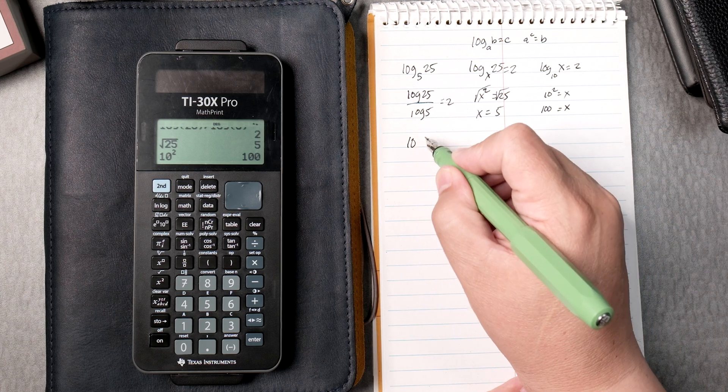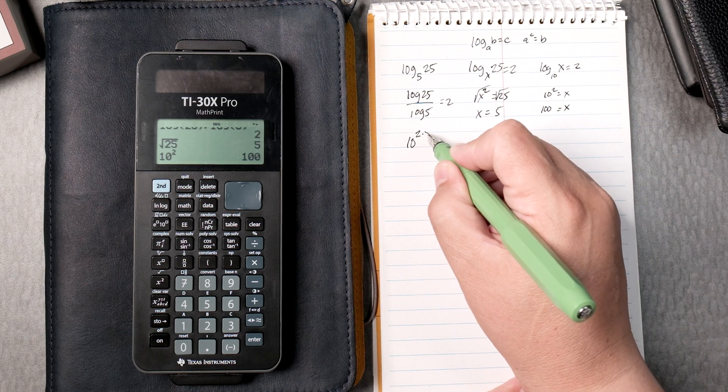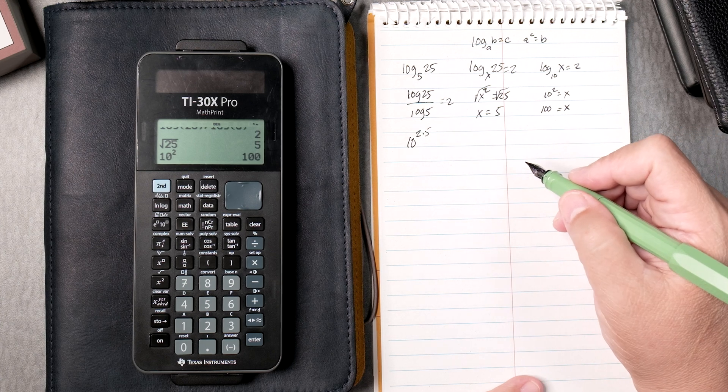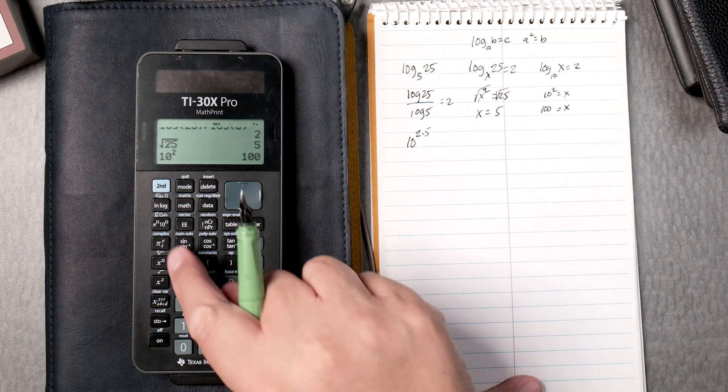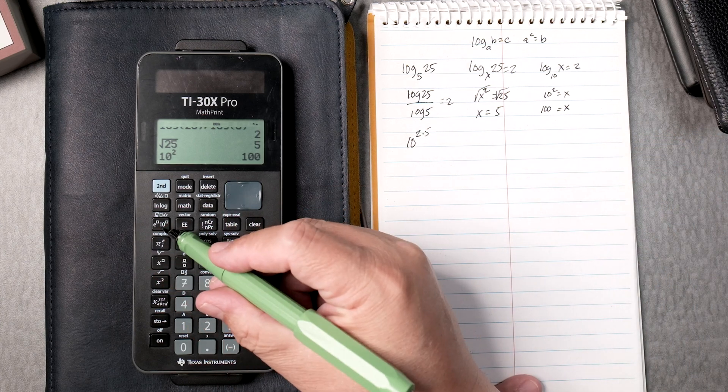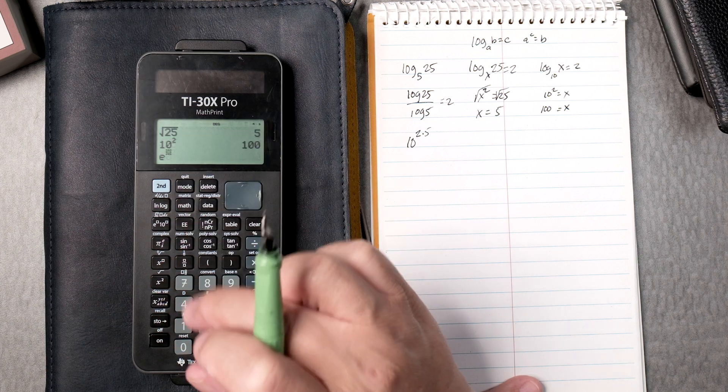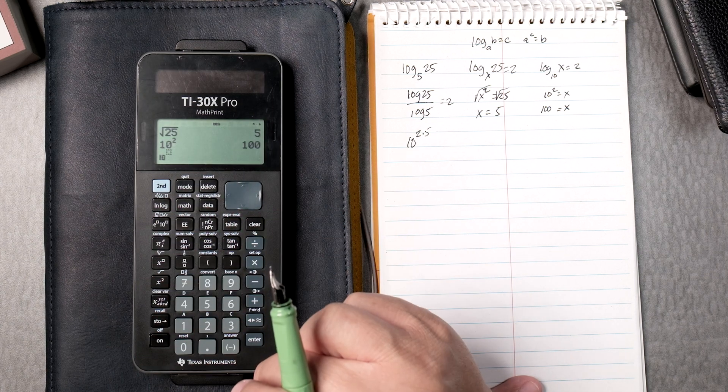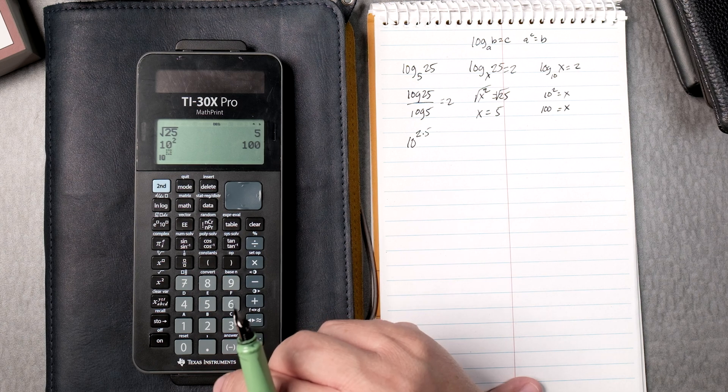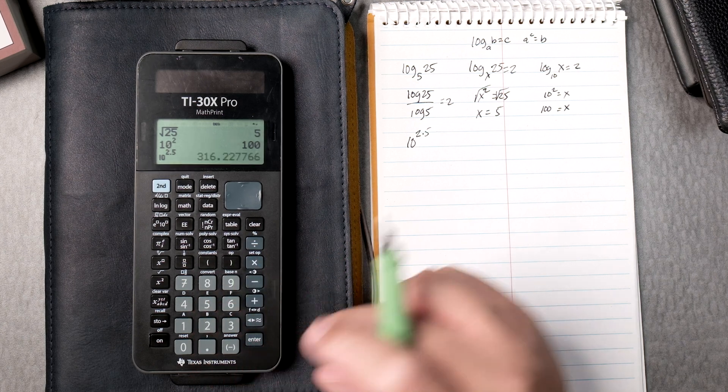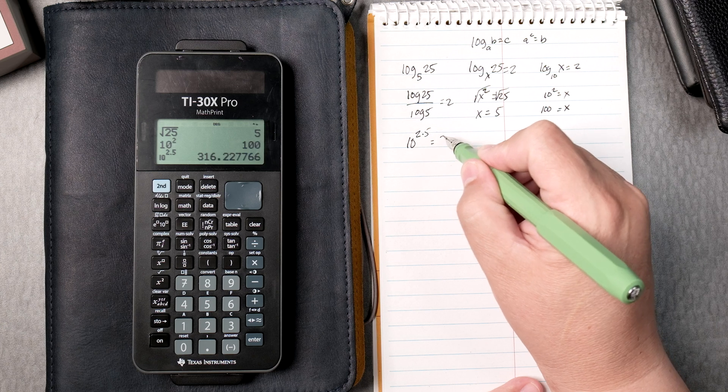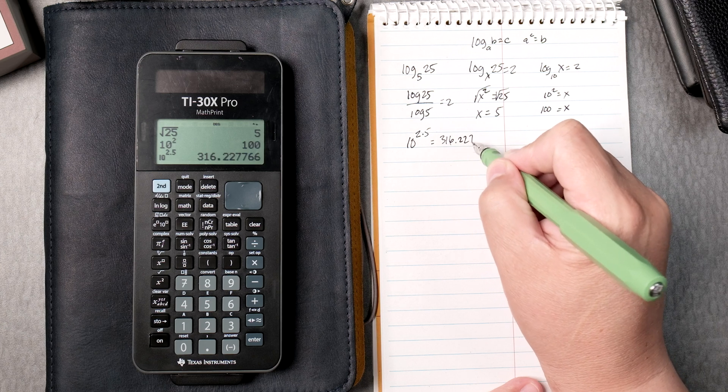Then the anti-log, 10 to the 2.5. So you can see this button right here has two of them, e to the blank, 10 to the blank. You press it once, e to the blank. Then you press it twice, it gives you 10 to the blank. Here we're going to put 2.5, you enter, and it gives you 316.227.